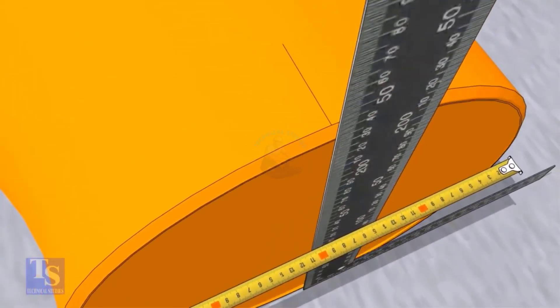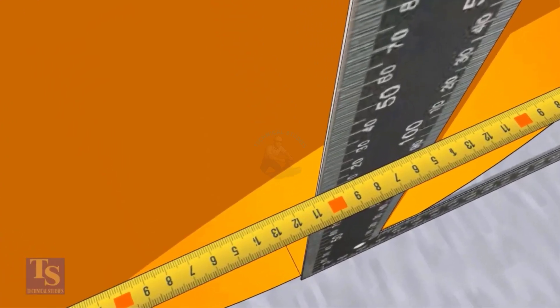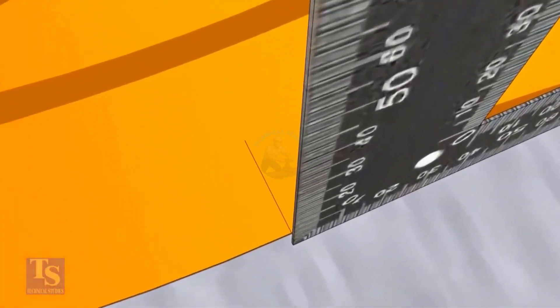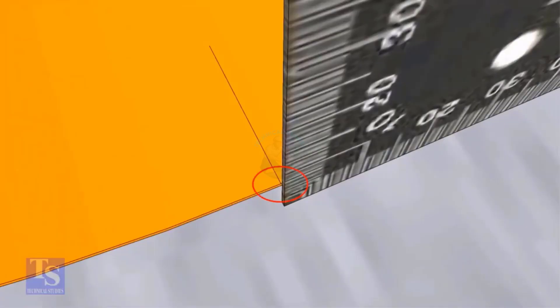Now draw lines on the top and bottom of the elbow where the edge of the right angle touches. Transfer this line to the outer face of the elbow.